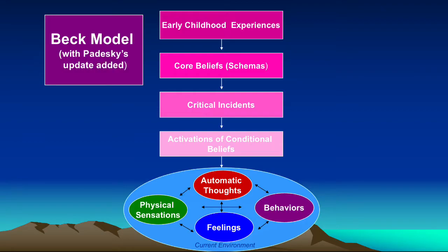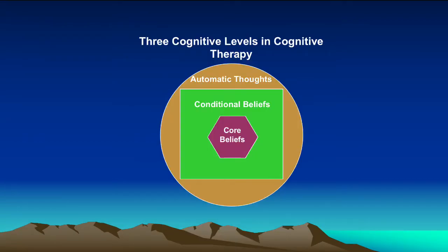Automatic thoughts are those things that just kind of automatically respond within the mind. Our automatic thoughts rely on our conditional beliefs, and those conditional beliefs are dependent upon our core beliefs that go all the way back to our early childhood experiences in many cases.